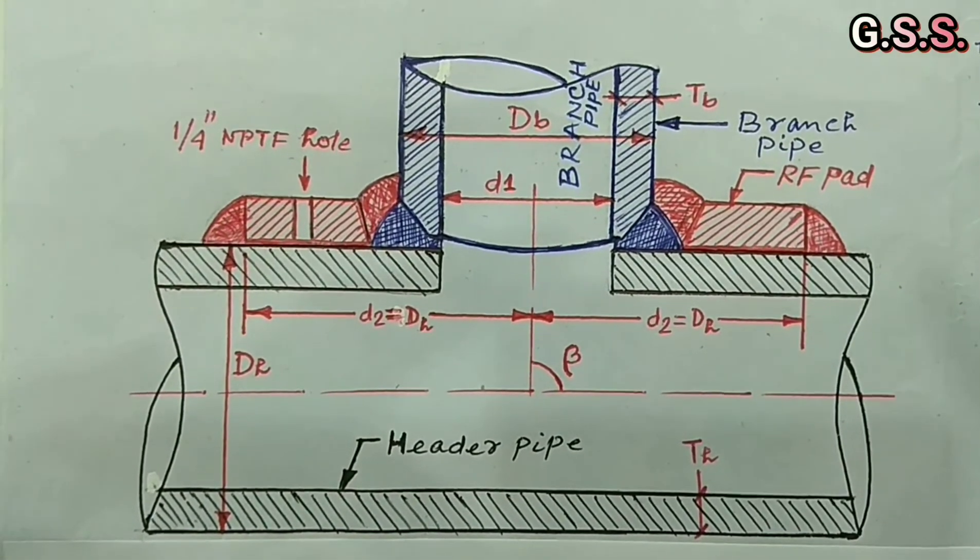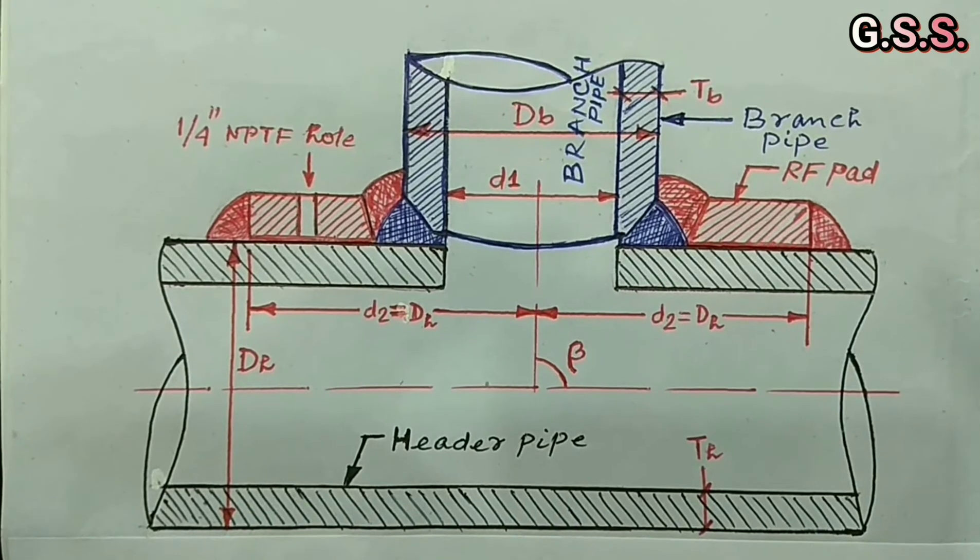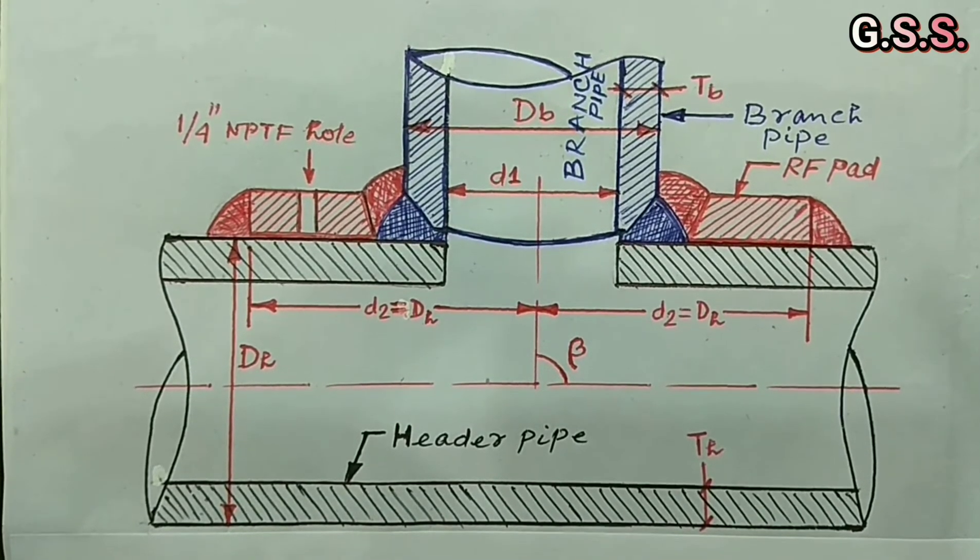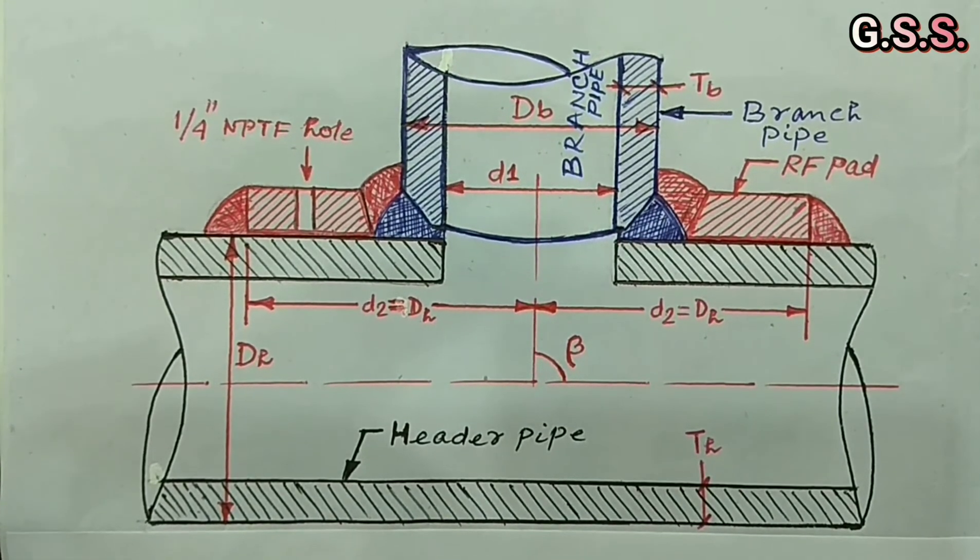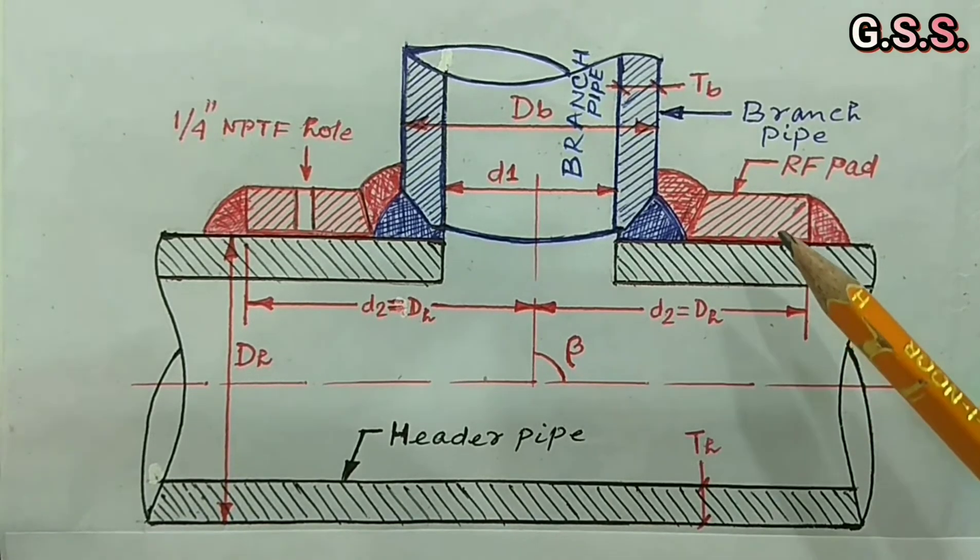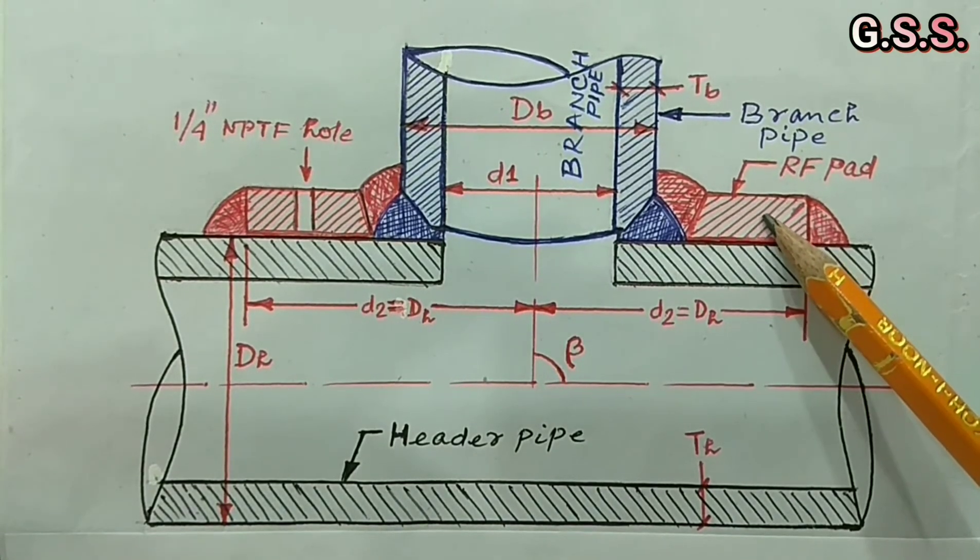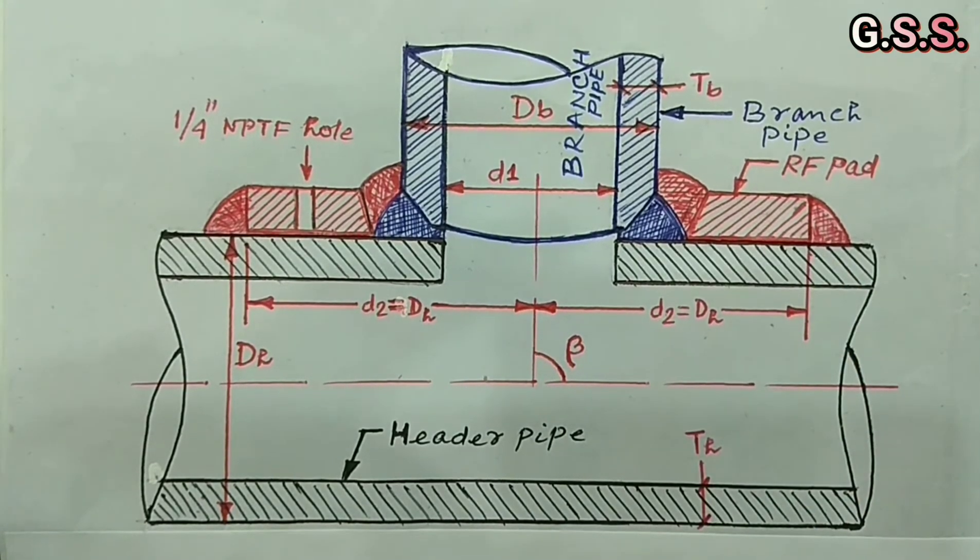Second option is making pipe to pipe direct branching, either reinforced or unreinforced. This sketch is for a reinforced branching with RF pad. If we do not provide this RF pad, then the branch is unreinforced branch.